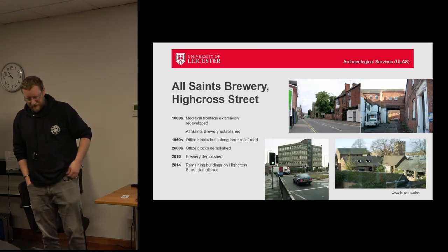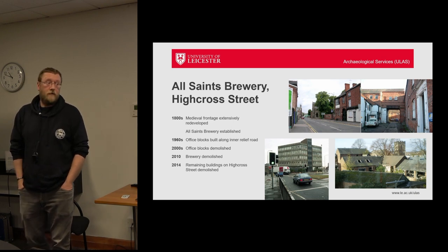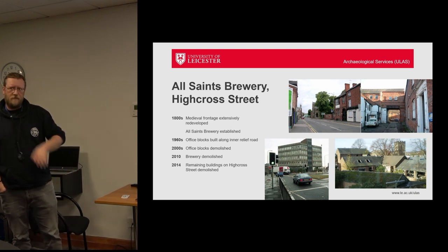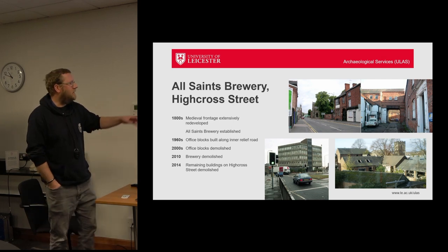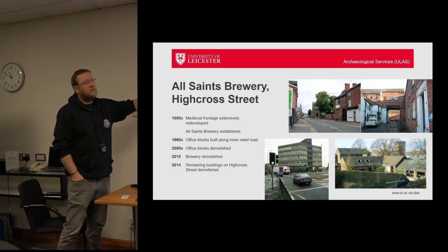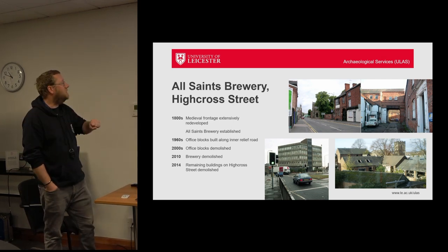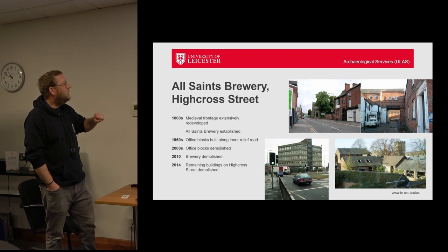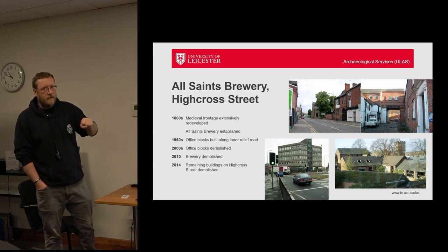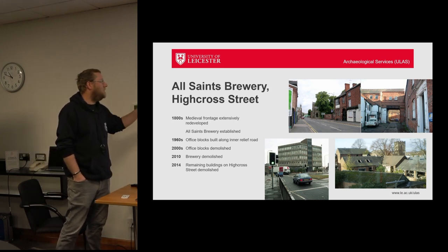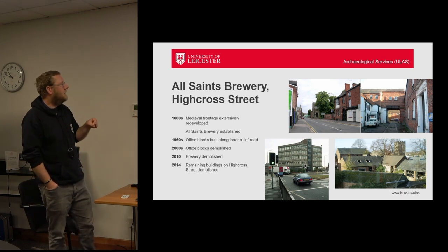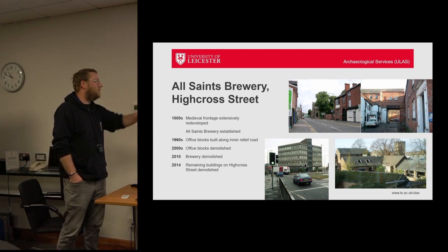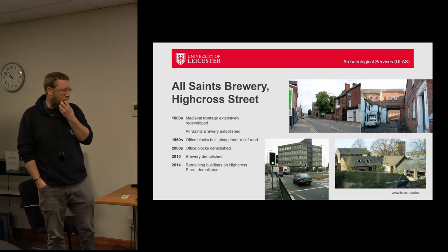That failure ultimately failed to adequately protect, conserve, and enhance the archaeology, and it was a missed opportunity to meaningfully investigate an area of Leicester we don't often get a chance to investigate. In contrast, the High Cross old brewery site had a similar sequence of evolution: its medieval frontage was extensively demolished in the 19th century, office blocks were built in the 1960s, demolished in the 2000s, the brewery was demolished in the early 2010s, and the remaining buildings were cleared in 2014.